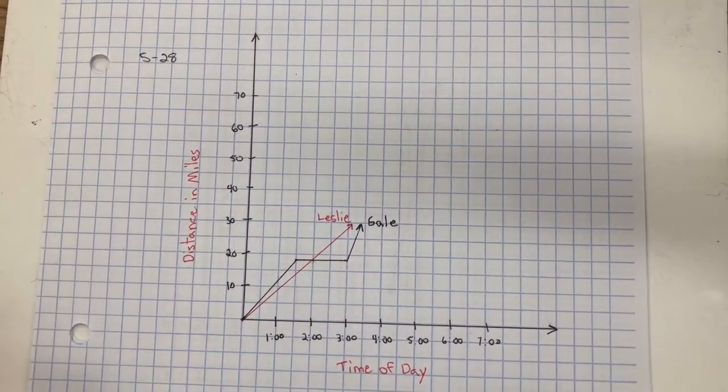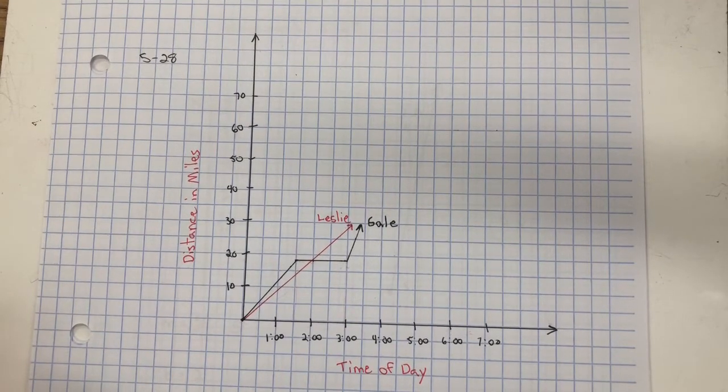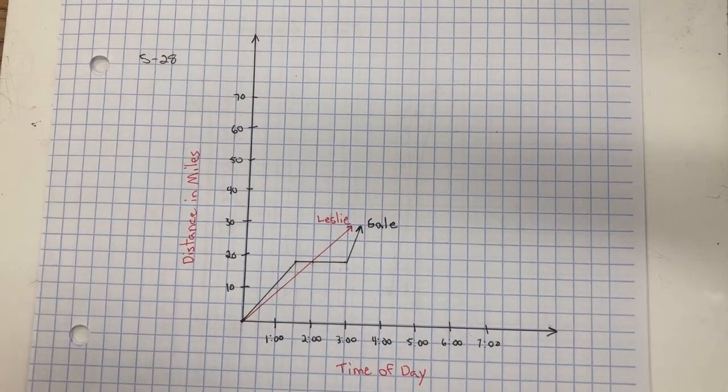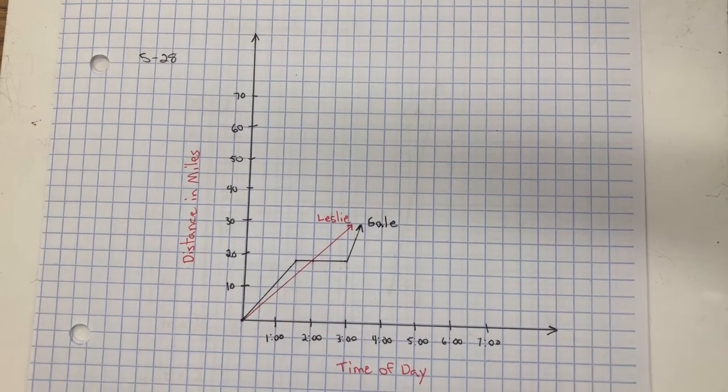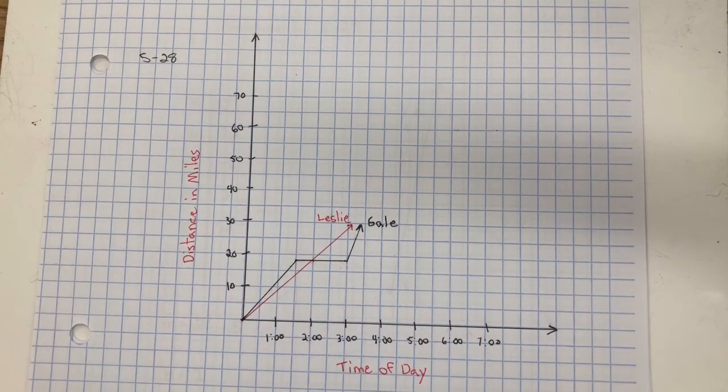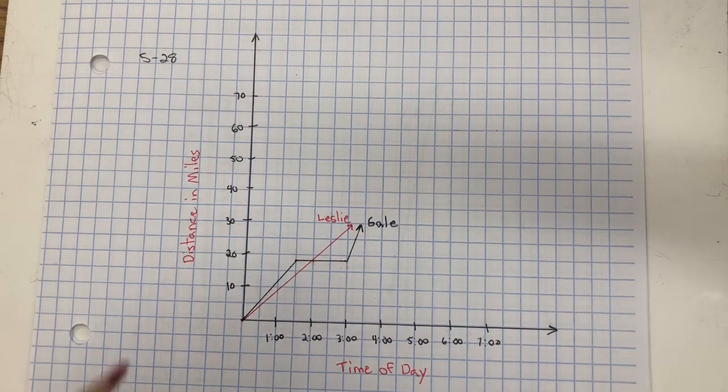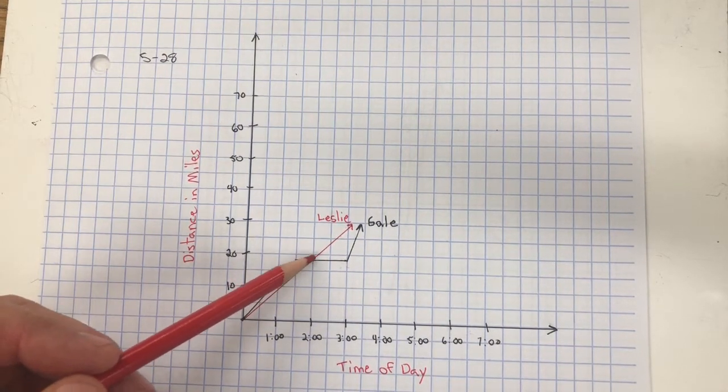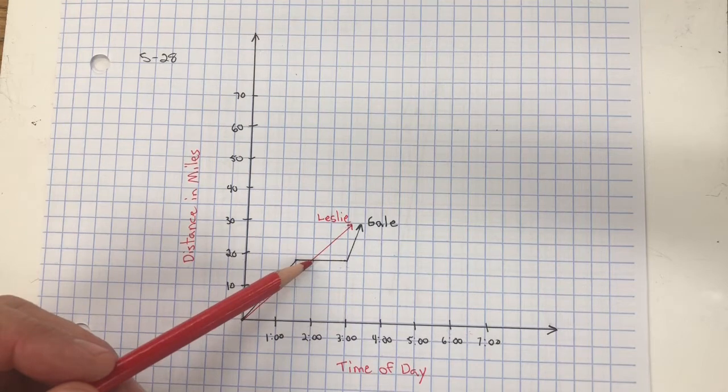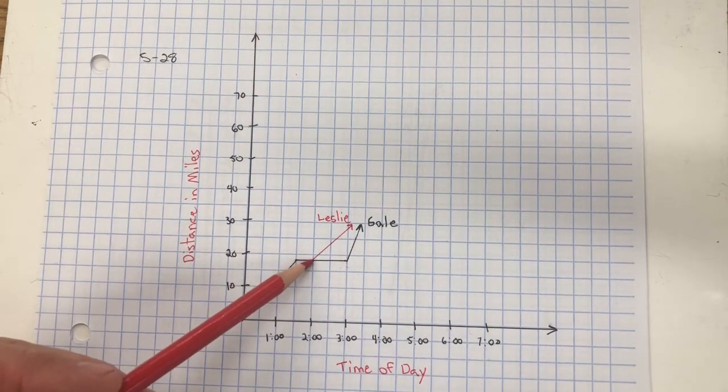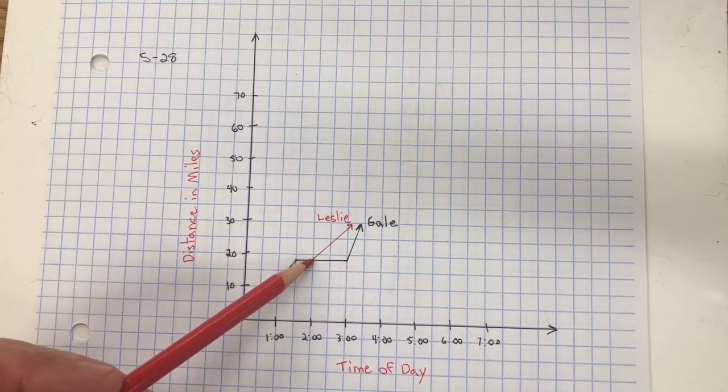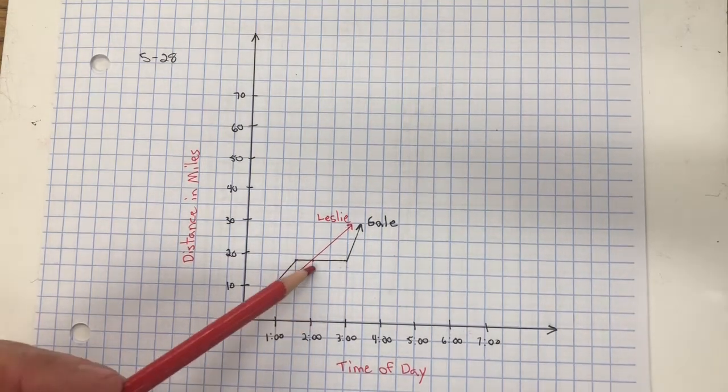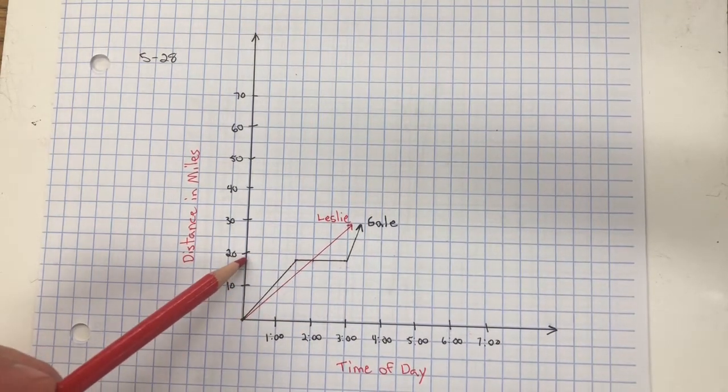In problem 528, Gail and Leslie are riding in a friendly 60-mile bike race that started at noon. The graph represents their progress so far. Part A asks, what does the intersection of the two lines represent? Well, here's the point of intersection where the two lines meet or cross. And at this point, Leslie and Gail are at the same time at the same distance.